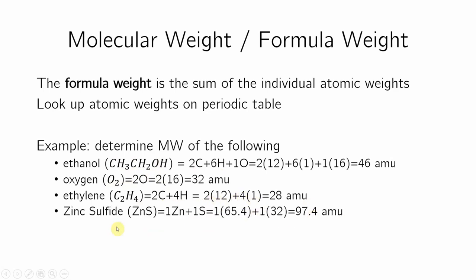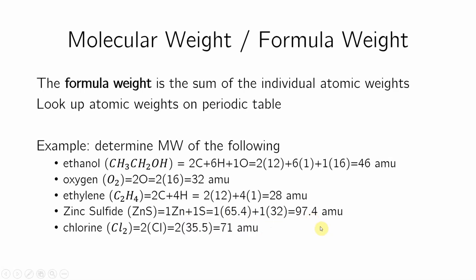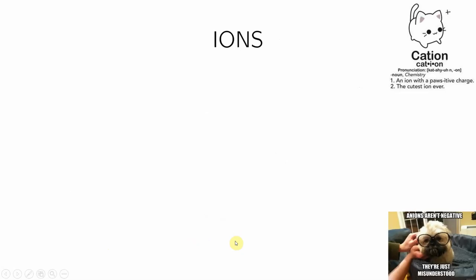Zinc sulfide is one zinc, one sulfur. Zinc is 65.4, sulfur is 32. I add them up, I get 97.4 AMU. Chlorine is Cl2, so two Cl's. Cl is 35.5, so I have 71 AMU.